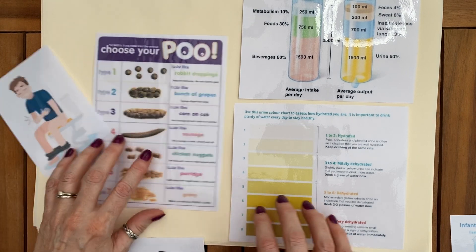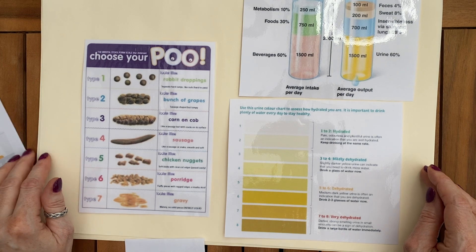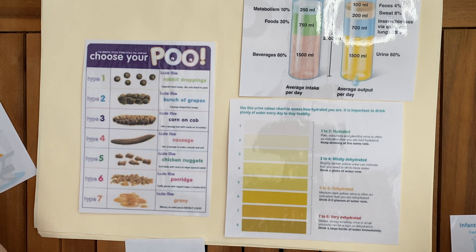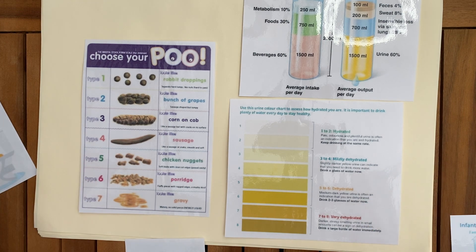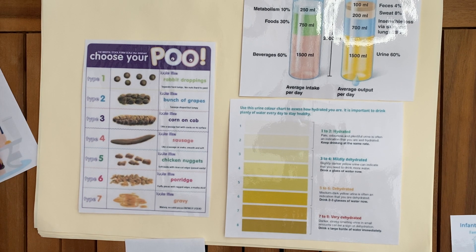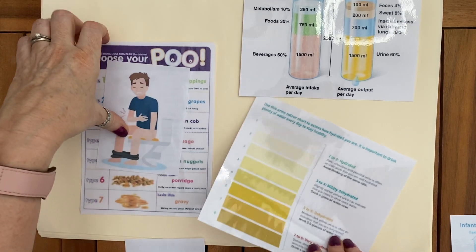When looking at diarrhea, there are also written communication tools that allow a child, a person with a learning disability, or someone who is unwell to point at a chart to indicate where they are, helping the carer give a more accurate diagnosis and the right treatment. On the stool chart, 'gravy-like or watery with no solid pieces' is extremely liquid — that's proper diarrhea — and that is where you are really losing quite a lot of fluid.